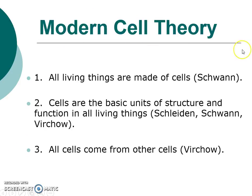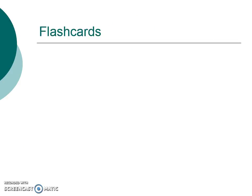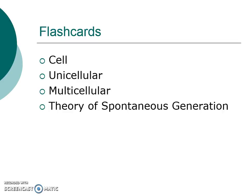You will need to know all three of those, so make sure you memorize them — put them on a note card and get them memorized. That leads us to our flashcards tonight. You need to do a card for cells, one for unicellular, one for multicellular, and one for the theory of spontaneous generation. I'd also do a card for the three things that make up our modern-day cell theory. So technically there are five to do, even though I have four listed. Okay, that concludes our notes. We'll see you in class.